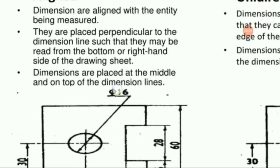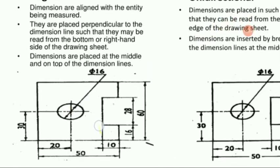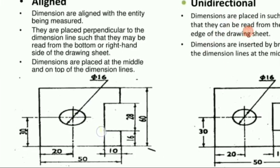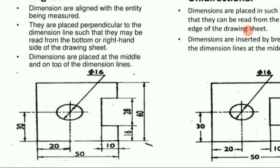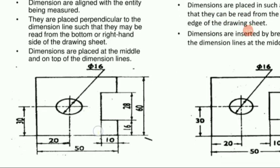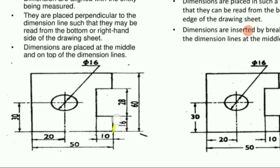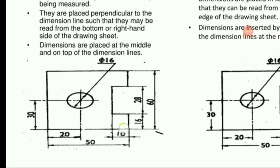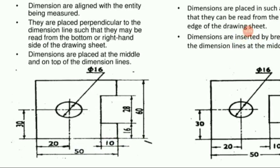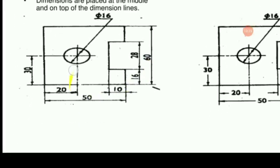Dimensions are placed at the middle and on top of the dimension lines. In the aligned system, dimensions are always perpendicular to the dimension line so they may be read from the bottom or right-hand side. You can see from the right-hand side and from the top — all the dimensions given are aligned.